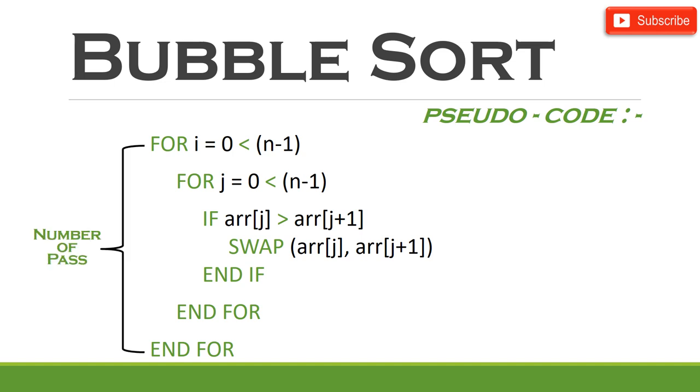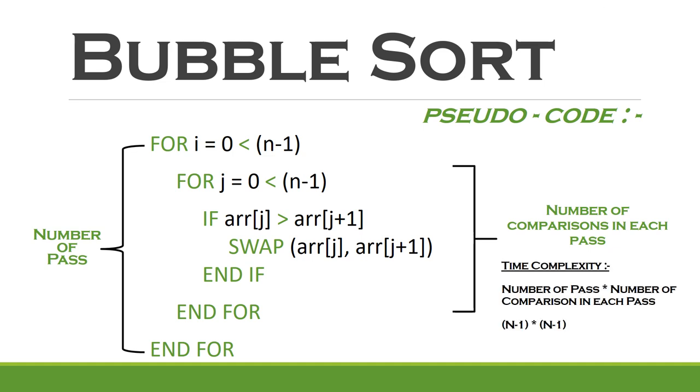The outer for loop runs for n-1 times and counts the passes. And the inner for loop also runs for n-1 times for the number of comparisons in each pass. The time complexity can be simply calculated by multiplying the number of passes with the number of comparisons in each pass. The time complexity comes out to be big O of n square.